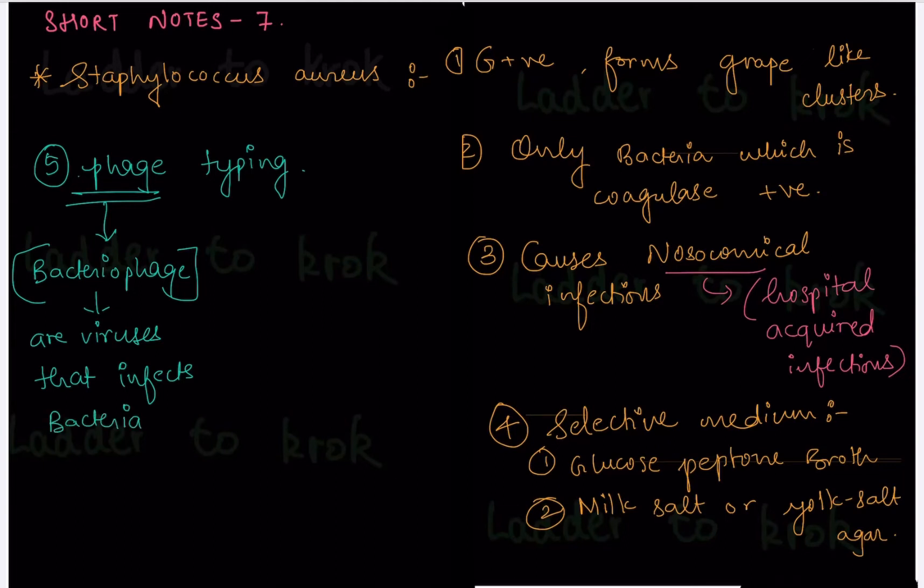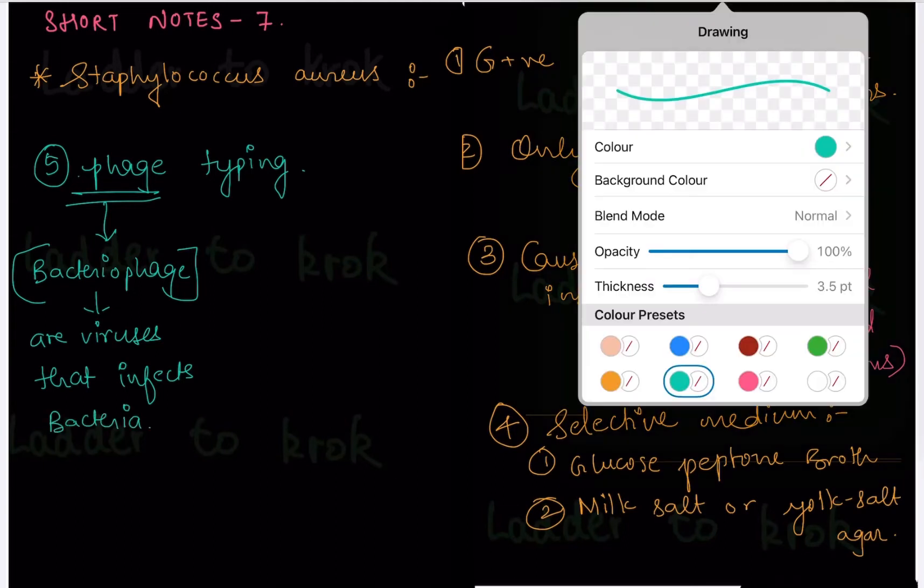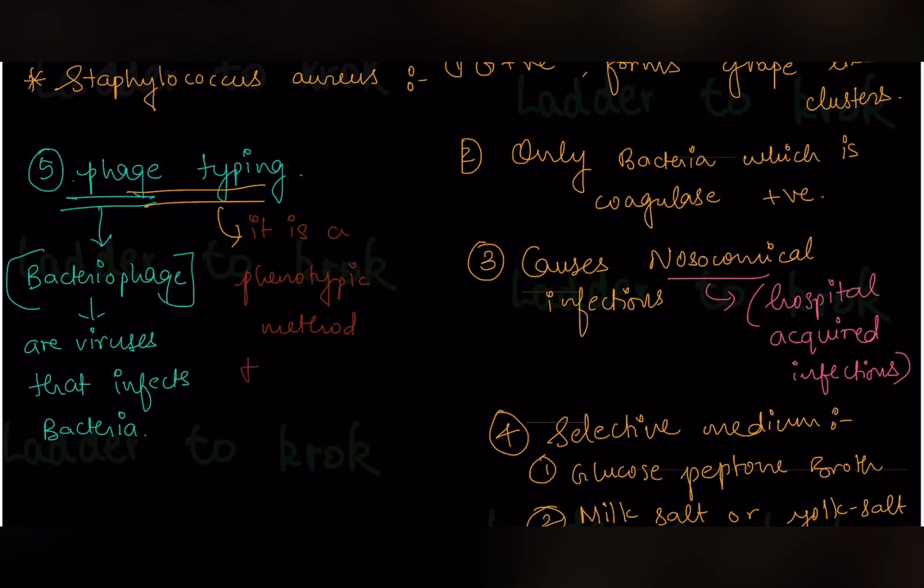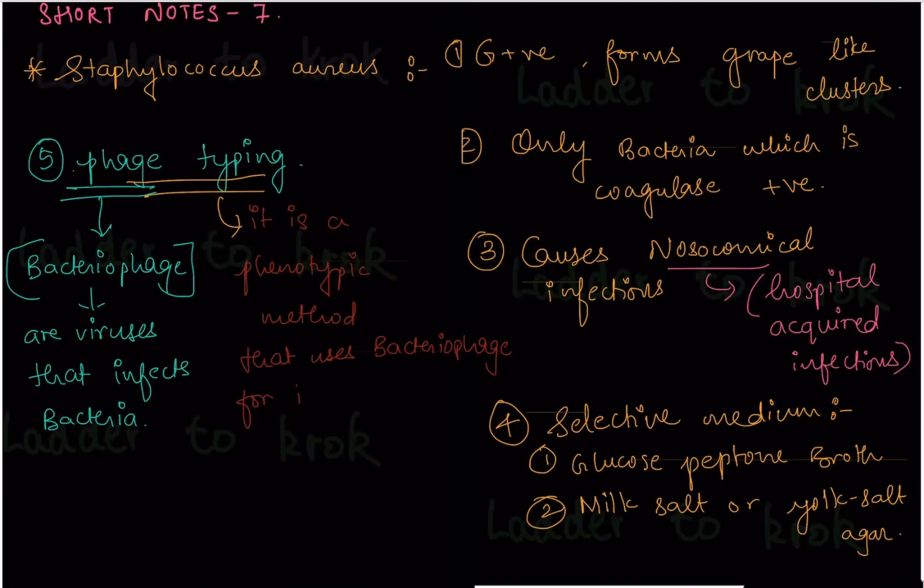Then next, coming back to our main word that was phage typing. What does this mean? So phage typing, it is a phenotypic method. A phenotypic method that uses bacteriophage for identifying and detecting bacterial strains.